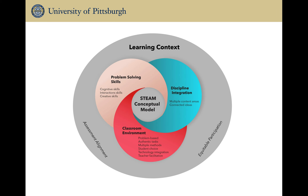We developed this conceptual model over years of research looking in classrooms. In the learning context, this broadly describes both the assessment alignment and ensures that all students are engaged by focusing on strategies that ensure this work is engaging to those students that sometimes are left behind. We have six different types of strategies that make up the STEAM conceptual model: problem-based authentic tasks, multiple methods, student choice, technology integration, and teacher facilitation. We're going to talk about those individually next.